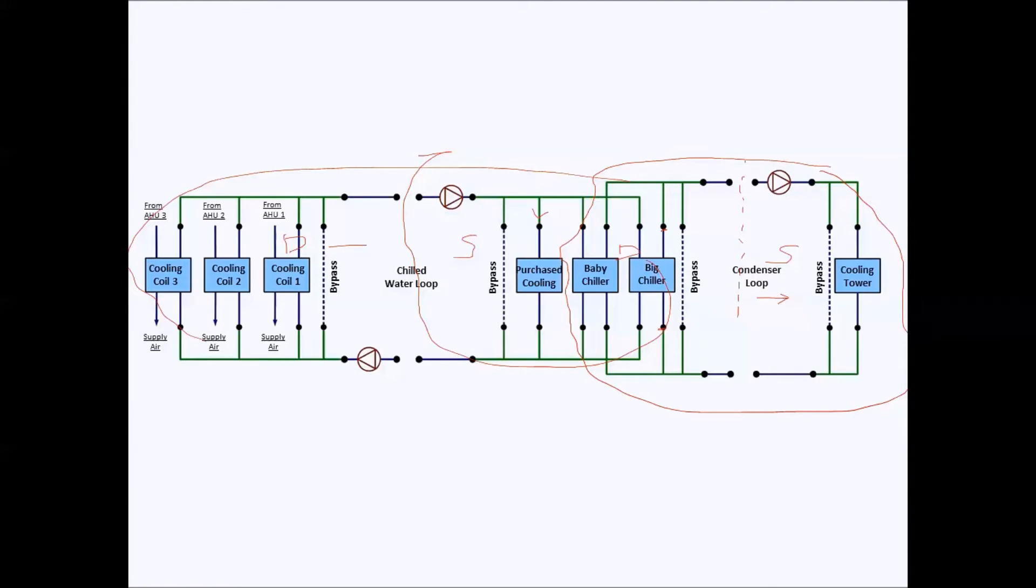We'll start with this chilled water loop. We'll first make a supply side and then demand side, and then afterward we'll make a condenser loop both supply side and demand side. So in this video I'll just cover the supply side.